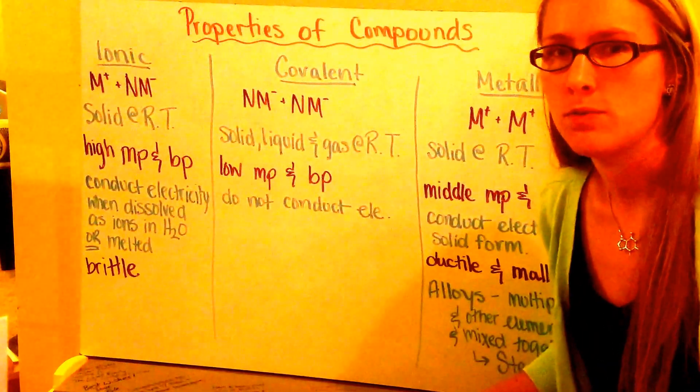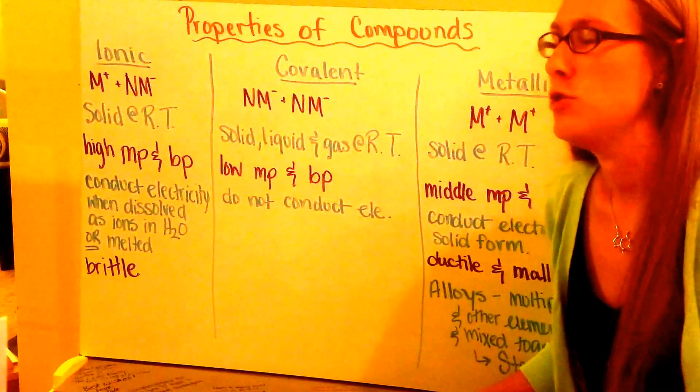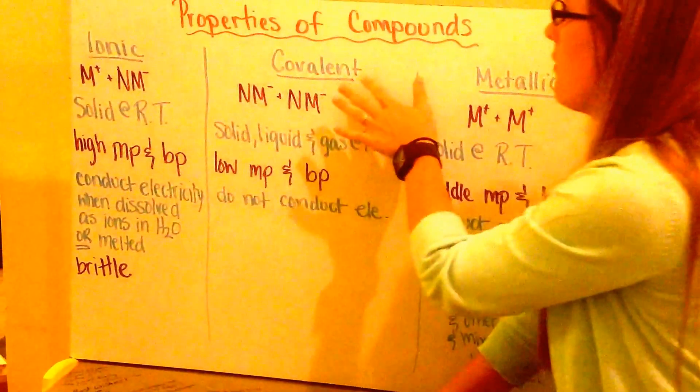That way, if we're given experimental information, you are able to accurately predict what kind of compound you have. There's three different types. We can have an ionic compound, a covalent compound,